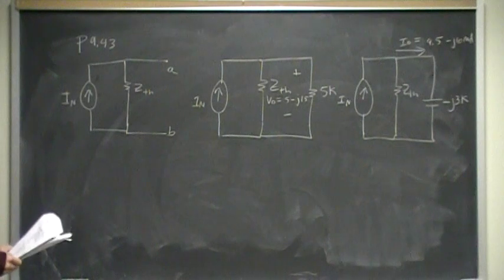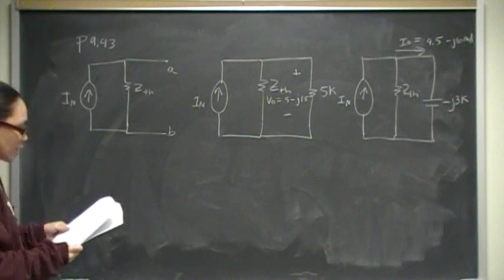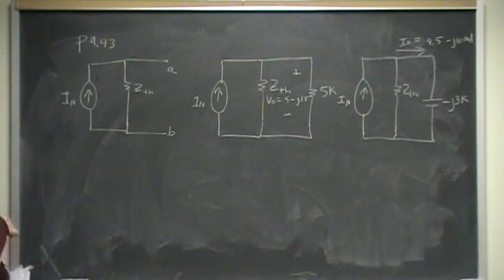This section, which is section 7, is on source transformations, Thevenin-Norton equivalent circuits, and this problem is on Norton equivalent circuits.